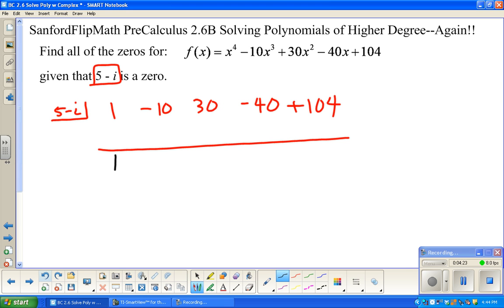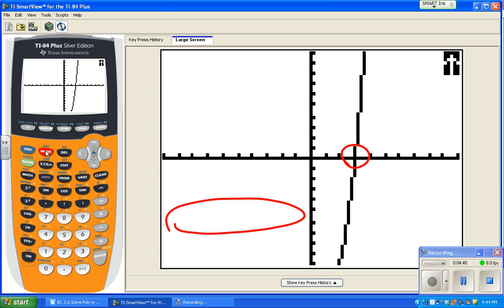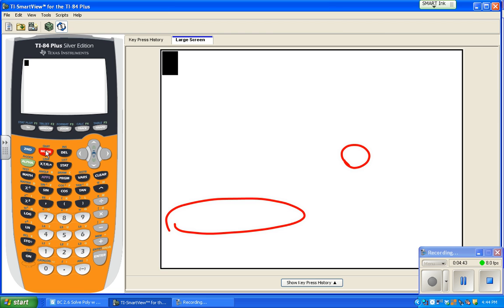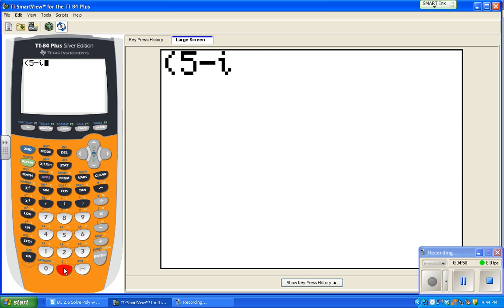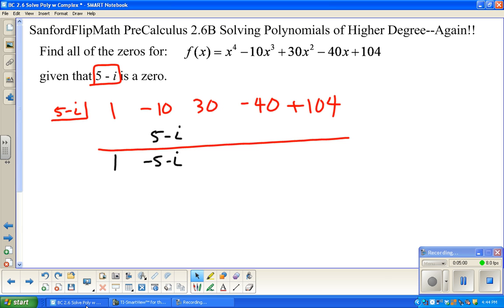We are going to bring down the 1, and then we're going to multiply. So 5 minus i. Remember, when you add real numbers and complex numbers, you basically are combining like terms. Now we need to multiply. 5 minus i times negative 5 minus i. I'm going to do that on the calculator. So 5 minus i times negative 5 minus i, and that's negative 26. Popping back over here, negative 26. So that's 4. 4 times 5 is 20. 4 times i is 4i, so minus 4i. Add those together. Negative 20 minus 4i.